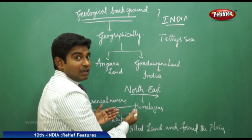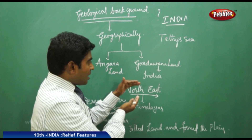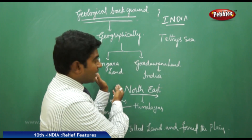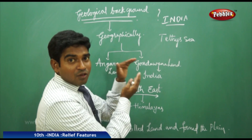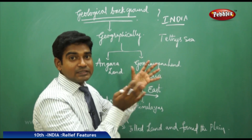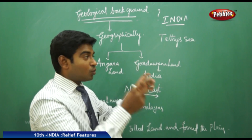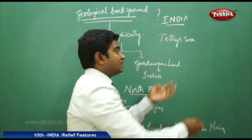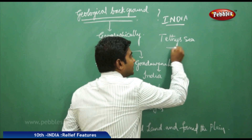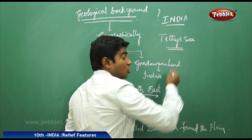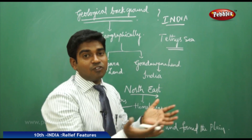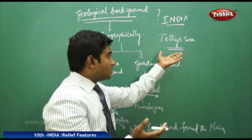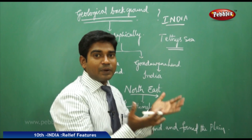Gondwana Land collided with Angara Land, that is the Eurasian plate, and formed the landmass of India. In the gap between Gondwana Land and Angara Land, there was a big sea known as the Tethys Sea.